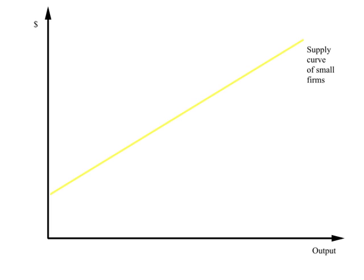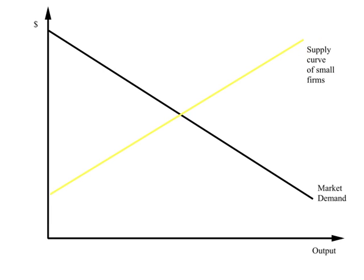There are a very large number of very small firms that behave as if they are under perfect competition. We can draw a supply curve for all small firms taken together, and this is the supply curve. This black line is the market demand curve for this product, which is produced both by the dominant firm and by the very large number of very small firms. The price leader or dominant firm will derive a residual demand curve for itself.